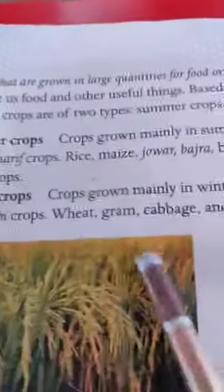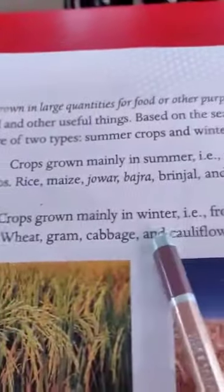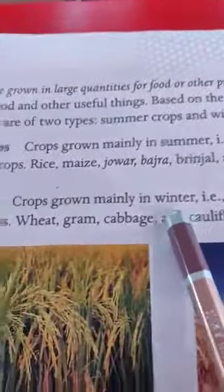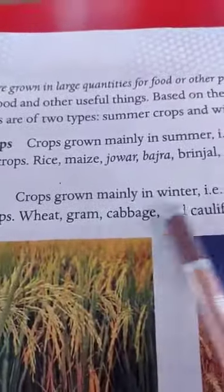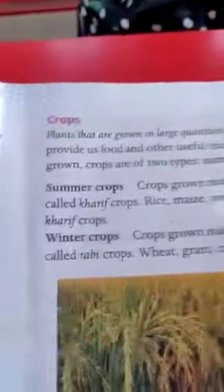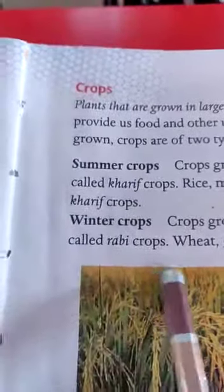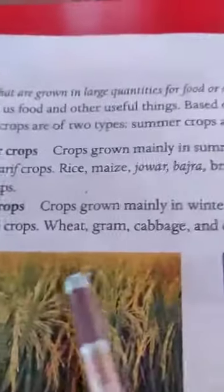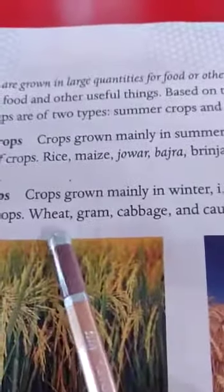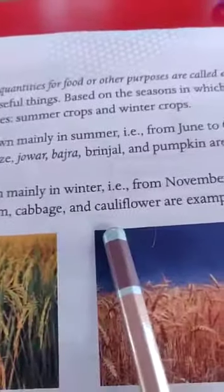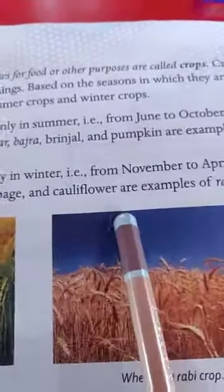Winter crops are grown mainly in winter, from November to April. These are called Rabi crops. Examples of Rabi crops include wheat, gram, cabbage and cauliflower.